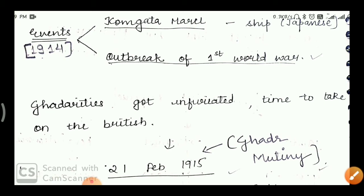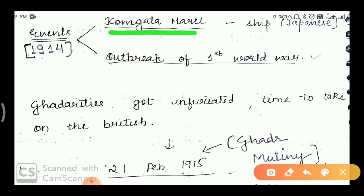Important events are two: the Komagata Maru incident and the outbreak of the First World War. The Komagata Maru was a Japanese ship. Its name was Komagata Maru. It was owned by a rich merchant, who took ownership of 370 passengers who were to be transported.